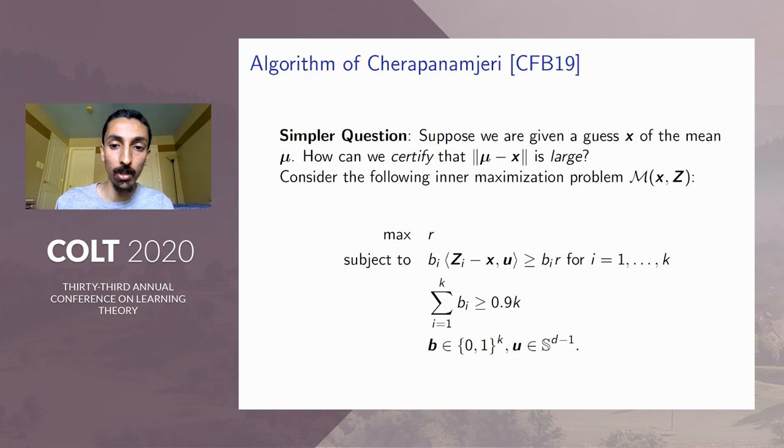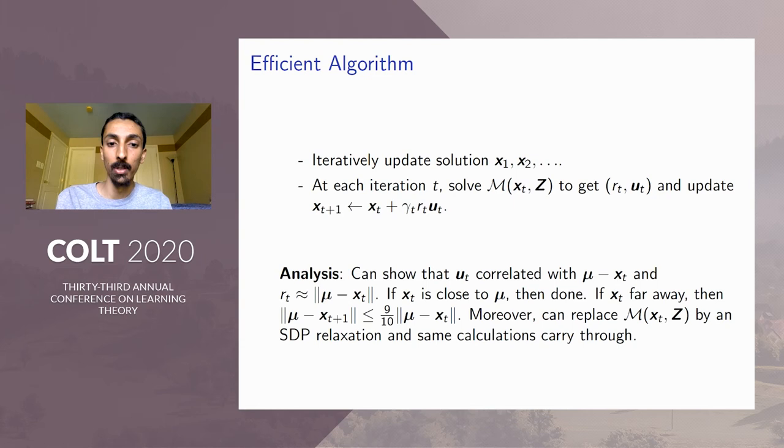So it's not clear that we can solve this efficiently, but suppose for a moment that we could solve this problem. We can then turn this into a full algorithm as follows. We'll iteratively update our solution. So we'll start with an initial guess x_1. We update it to x_2, x_3, and so on. At each iteration t, we're going to solve this inner maximization problem to get a radius r_t and a unit vector u_t. And we're going to basically take a gradient step in that direction.